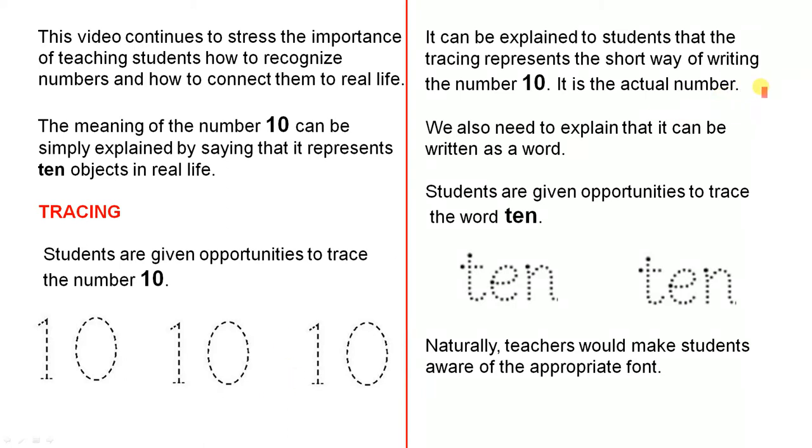It can be explained to students that the tracing represents the short way of writing the number 10. It is the actual number. We also need to explain that it can be written as a word. Students are given opportunities to trace the word ten. Here are just two examples, and you'd give them many more. Naturally, teachers would make students aware of the appropriate font.